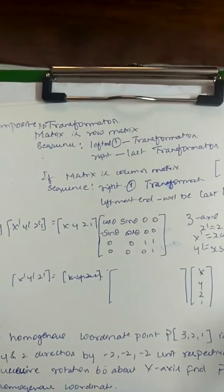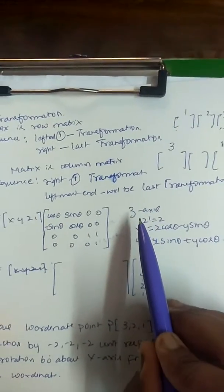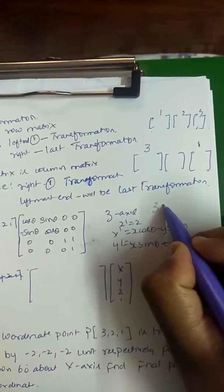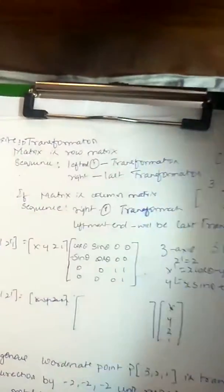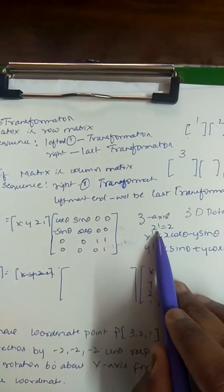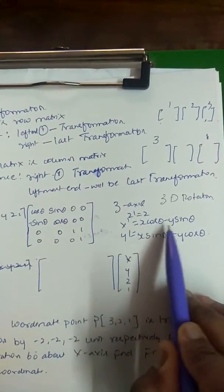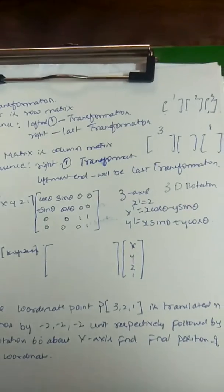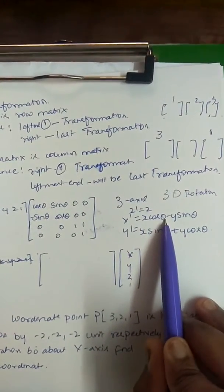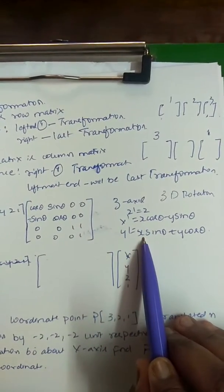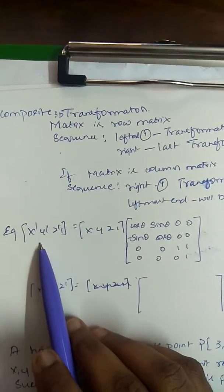For understanding the row matrix versus column matrix difference, I've taken a 3D rotation example — rotation with respect to the Z-axis, where the Z-axis remains the same. Z-dash equals Z, X-dash equals X·cosθ minus Y·sinθ. This is with respect to anti-clockwise rotation by default. If you want clockwise, replace θ with minus θ. Y-dash equals X·sinθ plus Y·cosθ.